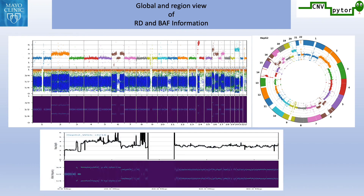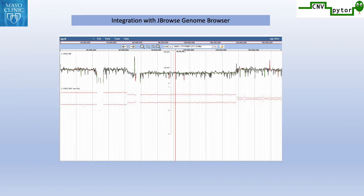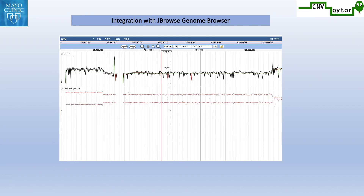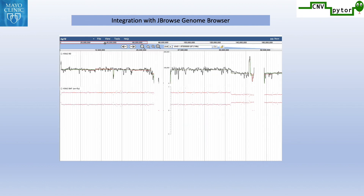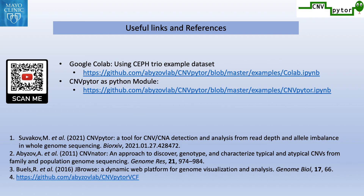We also have a region plot to view a specific region in detail. We developed a JBrowse plugin to visualize CNB-Pytor data and perform some on-the-fly analysis. In the end, we have listed a few useful links and references. For more details, please visit the CNB-Pytor GitHub page.